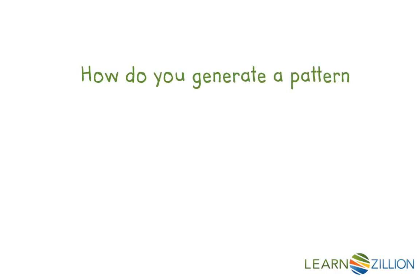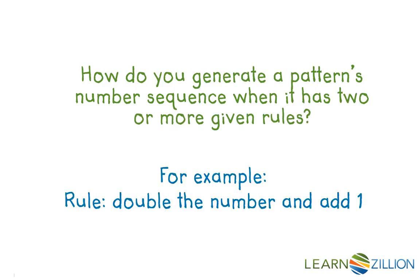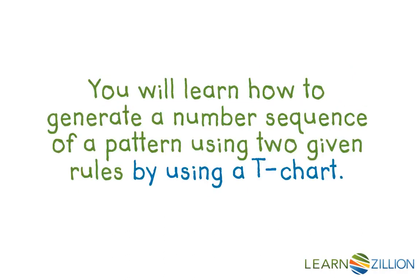How do you generate a pattern's number sequence when it has two or more given rules? For example, take the rule: double the number and add one. You will learn how to generate number sequences of a pattern using two given rules by using a T-chart.